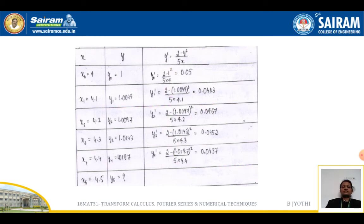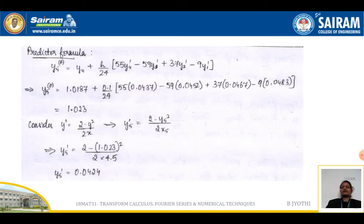Now with these values let us formulate the predictor formula. Here instead of y₃ we are writing it as y₄. The formula is y₅(p) = y₄ + h/24[55y₄' - 59y₃' + 37y₂' - 9y₁'], which on substitution and simplification gives 1.023.